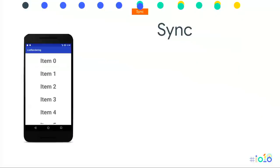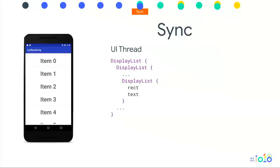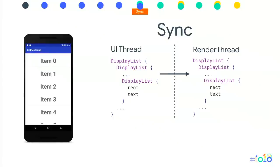Now we have the display list for the entire tree — that's all we need to do on the UI thread. Now we need to sync that information over to the render thread, which is a separate thread dealing with the GPU side. On the Java side we produced all the information; on the native side we take that and sync it to the GPU. The sync operation copies a handle and related information, including the damage area — only item two changed, so we don't need to redraw anything outside that area. We also upload bitmaps — non-hardware bitmaps — to convert them into textures.